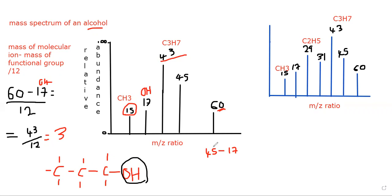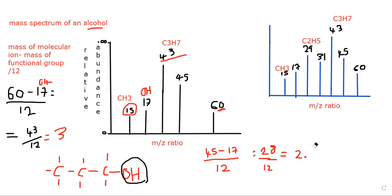Subtract the OH group from 45: 45 minus 17 gives 28. Then divide by 12: 28 divided by 12 is 2.3, ignore the decimal — so two carbons. Looking at this, if we put our OH group and the fragment has two carbons, the molecule would fragment there. So 45 represents two carbons and an OH group.